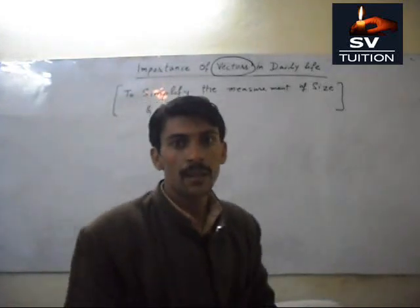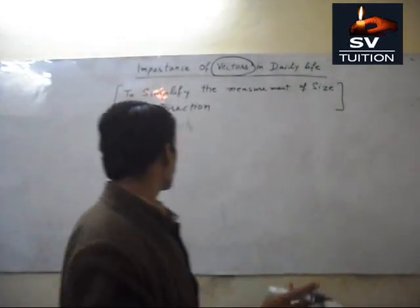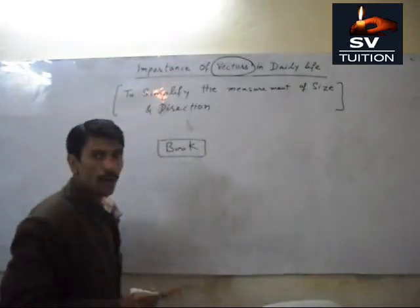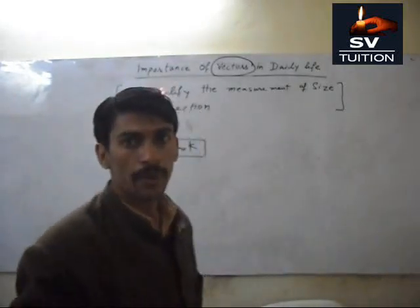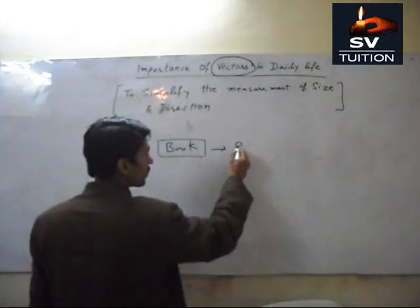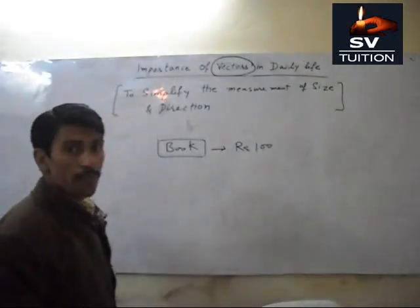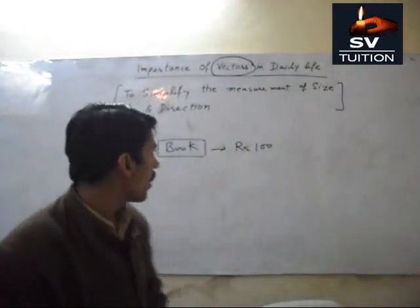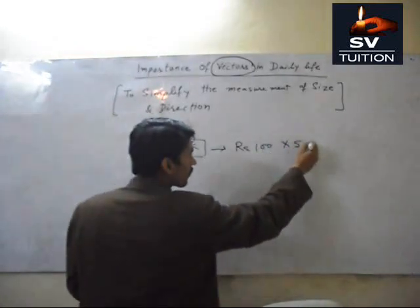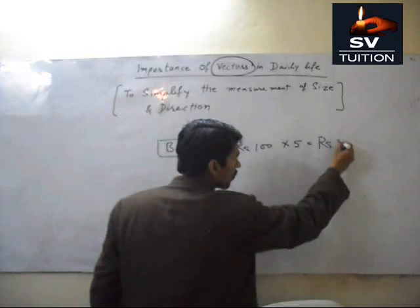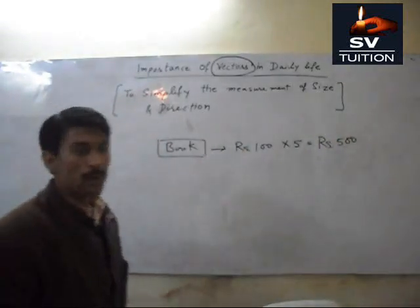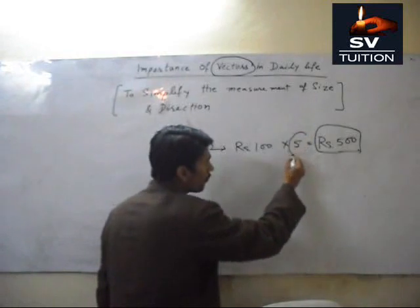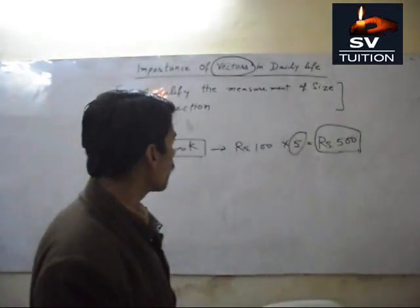As a student of commerce, when I buy anything, suppose I want to buy a book. I go to the shop and buy it with rupees 100. The vendor of this book will ask me how much quantity you want to buy. I want to buy 5 quantity. It means I have to pay rupees 500.